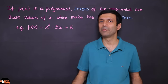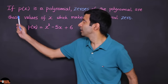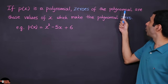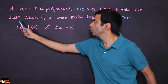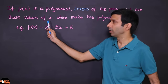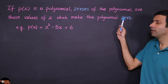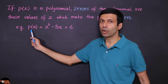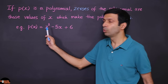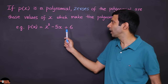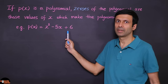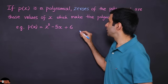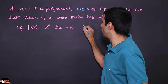Let's start with the first important concept: if P(x) is a polynomial, the zeros of the polynomial are those values of x which make the polynomial zero. For example, let's take this polynomial P(x) = x² - 5x + 6. To find the zeros of this polynomial, we need to set this polynomial equal to zero.